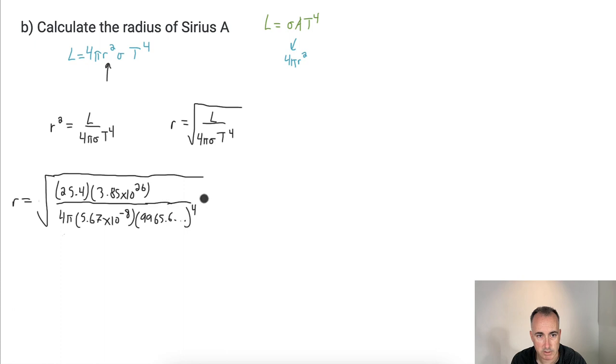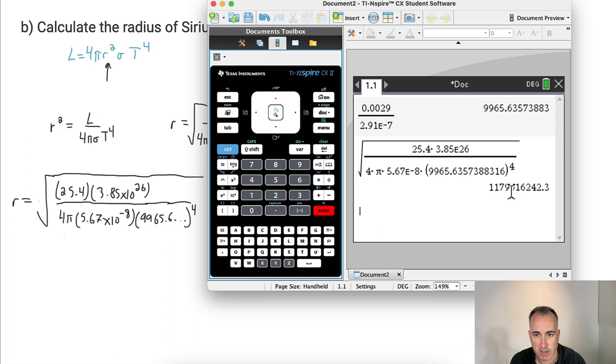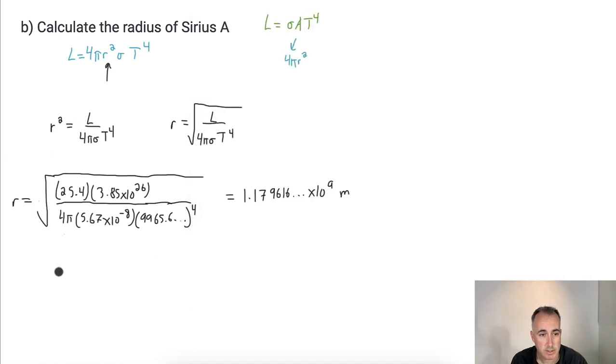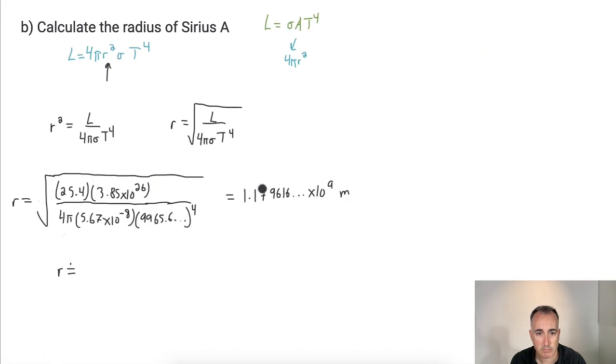All that times the temperature to the fourth. Remember the temperature here, the 9965.6. But you have to keep going with all the decimals if you can, to the fourth. And don't forget to square root that. I'll just do this on my calculator. So I need the square root of, I want to do a fraction. And I'm going to say 25.4 times 3.85 times 10 to the 26. That's my luminosity on the top. Divide that by 4 times pi times 5.67 times 10 to the minus 8 all times, and here I'll just say answer because then it keeps all the decimals. But I want the answer to the power of 4. So then I get this answer: 1.1796 times 10 to the 9 meters. If I wanted to do it to three significant figures, which is what I should be using, then I'll say it's 1.18 times 10 to the 9 meters.